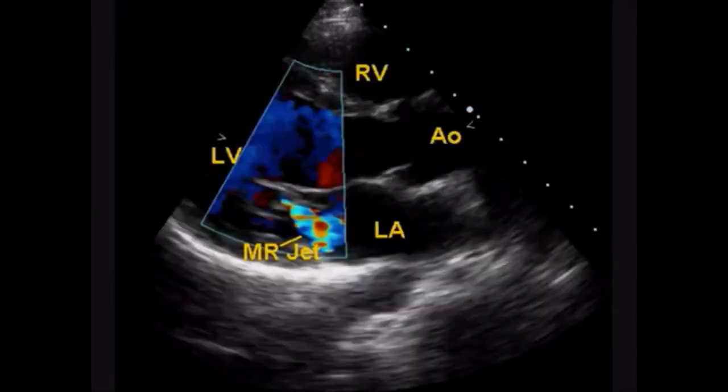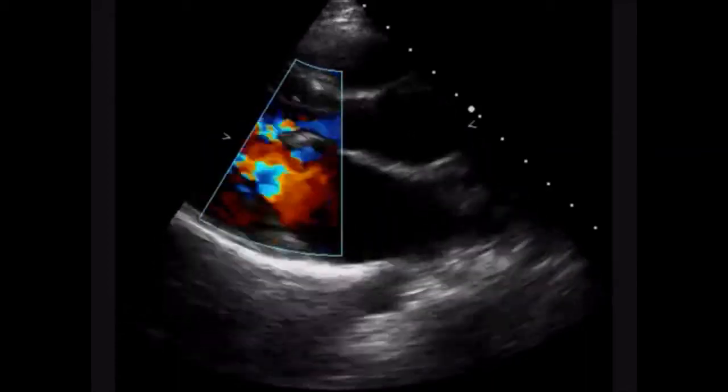Here the color Doppler jet — the MR jet, mitral regurgitation — is seen in the parasternal long axis view.